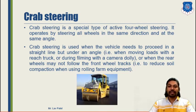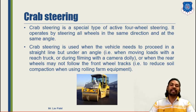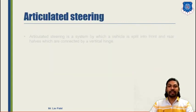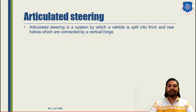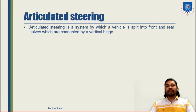One example of crab steering is the road roller, in which the front rollers are set at a certain angle and the same angle is provided to the rear rollers via crab steering, so the desired path can be achieved and road smoothness can be applied uniformly. Next is the articulated steering system. Articulated steering is a system by which a vehicle is split into front and rear halves connected by a vertical hinge, with the front portion and rear portion acting independently.